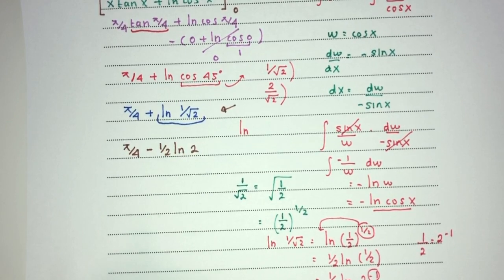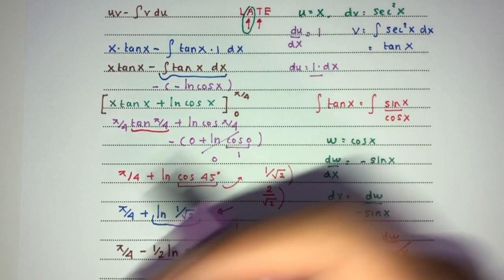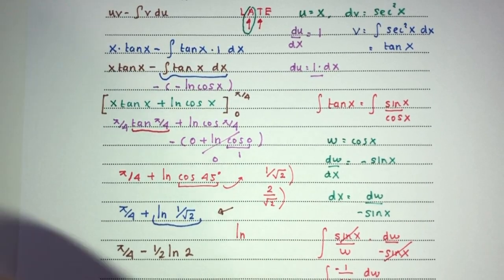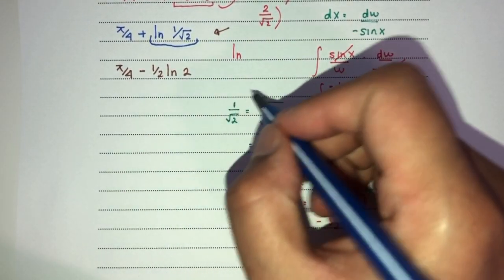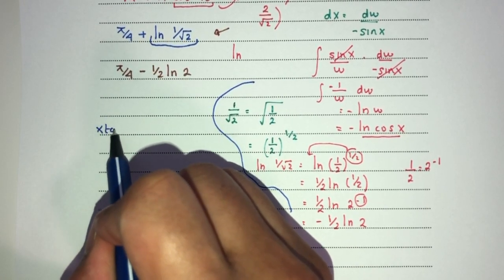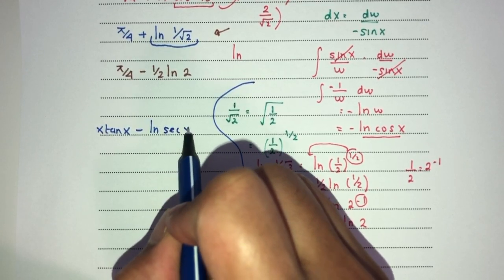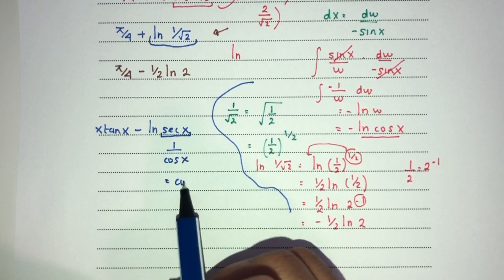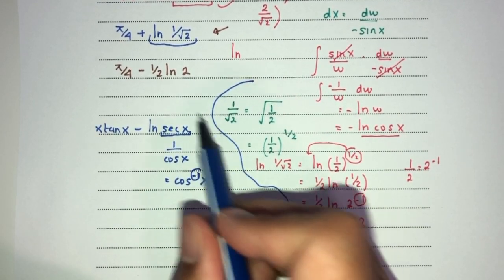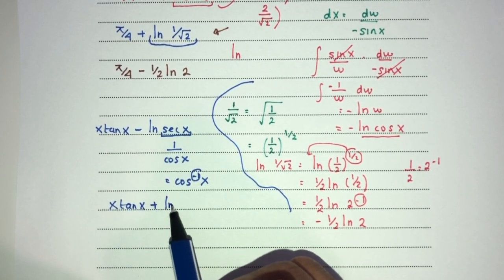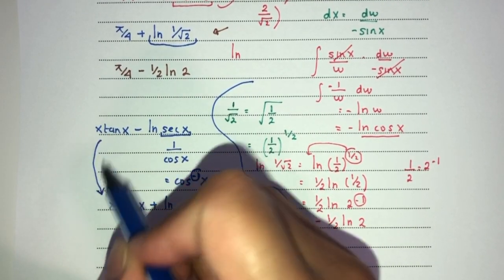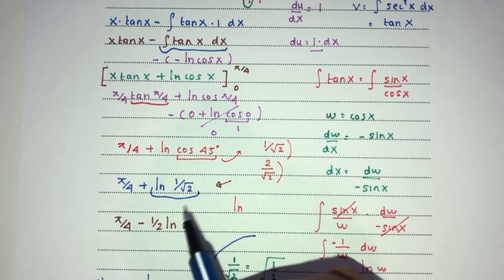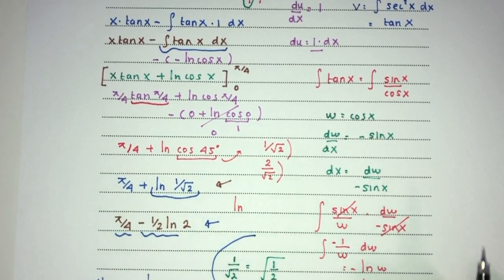Something I've seen in the comments is that in the marking scheme it has sec, so let me show you why that is the same. In the marking scheme we have x tan x minus ln of sec x. Now sec x equals 1 over cos x, which equals cos to the power minus 1 of x. Sending the power over, you get minus ln of cos x, so minus minus ln of cos x becomes plus ln of cos x. So this and this are the same thing — no confusion. If you see sec in the marking scheme it is okay, and pi/4 minus half ln 2 is your final answer for question number 3.